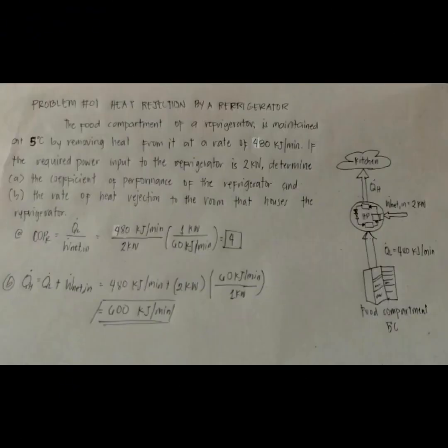Good day everyone and welcome again to our another engineering solving session. Problem number one on thermodynamics: the heat rejection by a refrigerator. The food compartment of a refrigerator shown in the figure is maintained at 45 degrees Celsius.